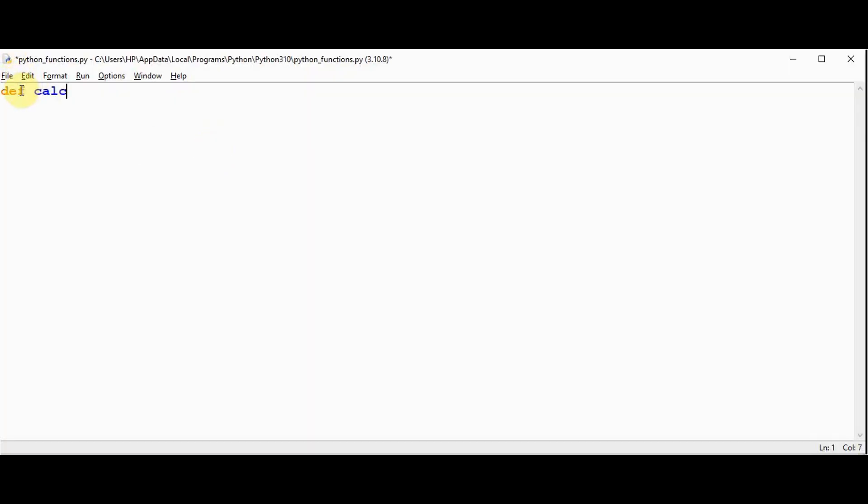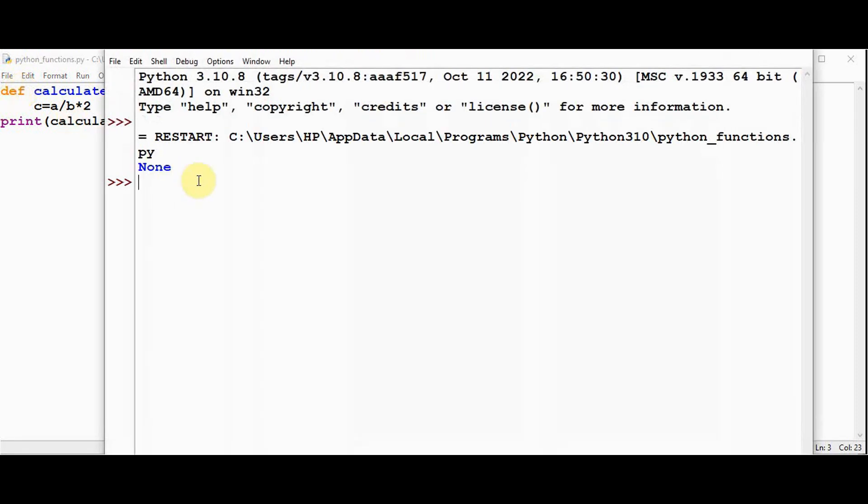Let me define a function called calculate, passing two arguments here, doing some calculation a slash b star 2. I'm calling the function here, print calculate. When executing, we get None as the output.